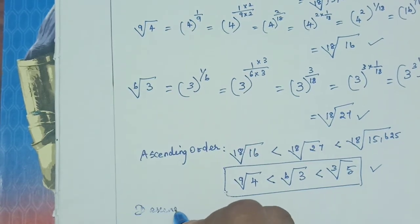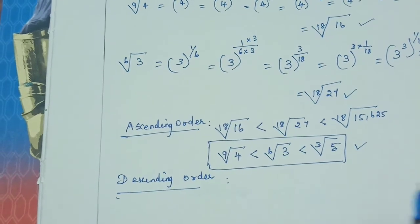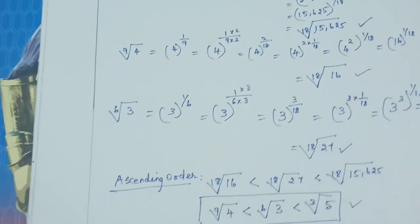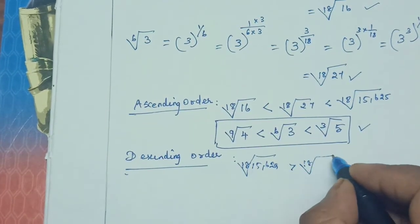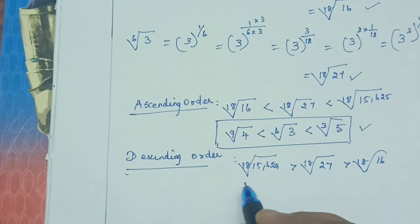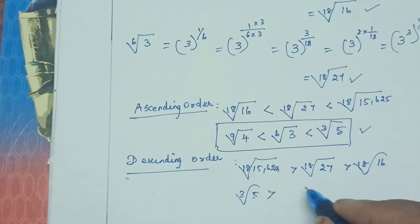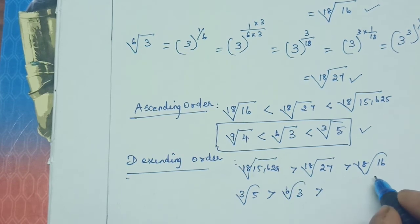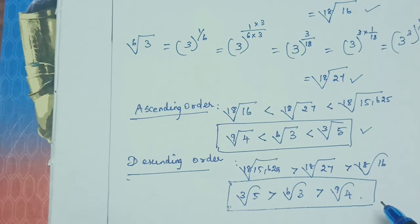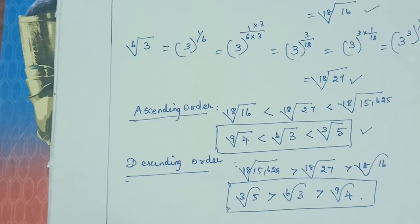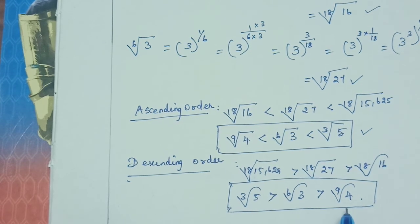For descending order — big to small — it is the reverse. Among the 18th roots: 18th root of 15,625 greater than 18th root of 27 greater than 18th root of 16. In original form: cube root of 5 greater than 6th root of 3 greater than 9th root of 4. So when surds have different orders, convert them to the same order, then compare radicands. Ascending order is small to big, descending is big to small — just the opposite.